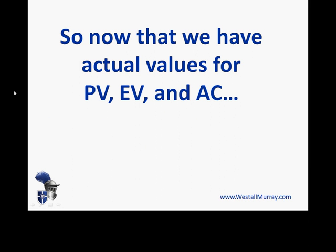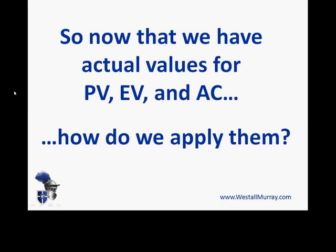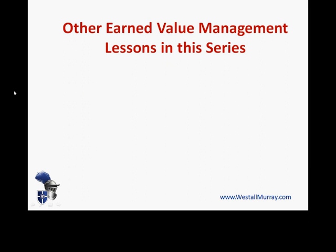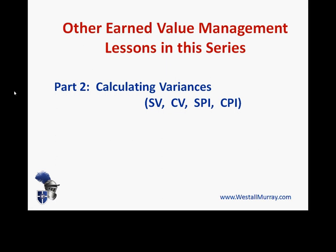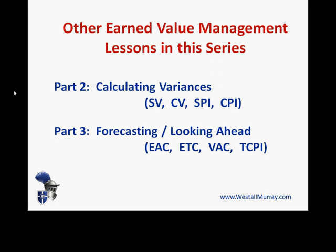Now that we've derived those values — Planned Value, Earned Value, and Actual Costs — what can we do with them? In part two of this series we'll look at how to calculate variances: Schedule Variance, Cost Variance, Schedule Performance Index, and Cost Performance Index. In part three we'll look at forecasting towards the end of the project: Estimate at Completion, Estimate to Complete, Variance at Completion, and the To-Complete Performance Index.